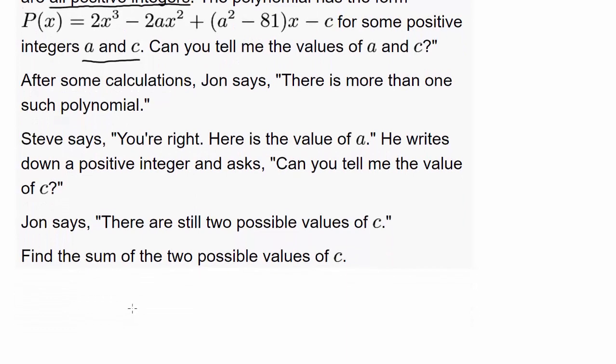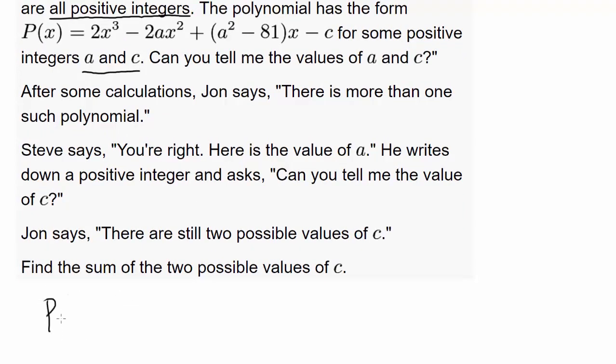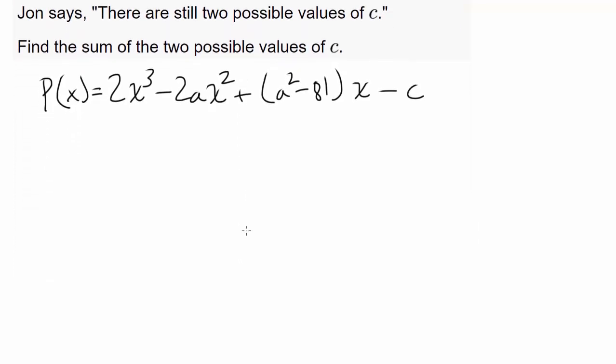So how am I going to start this question? Let me rewrite the polynomial. P(x) = 2x³ - 2ax² + (a² - 81)x - c. We know the roots of this polynomial are integers, and let's let those be r₁, r₂, and r₃. And we know these are positive integers, greater than zero, and all of them belong to the integers.